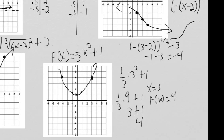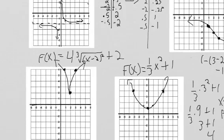Remember, if we multiplied this by 1/4 it would flatten out even more — 1/5, 1/6. This is something you can try on Desmos: plug in (1/10)x² and you'll see it getting even flatter. So there we go — there are all of our graphs. Look how good they look.